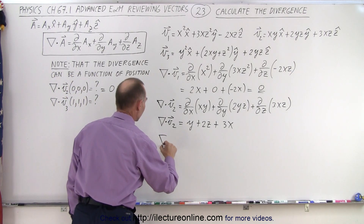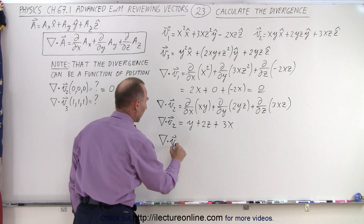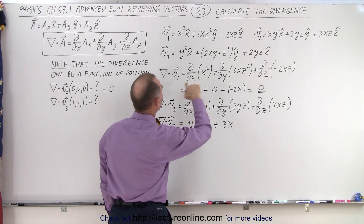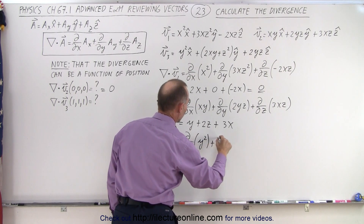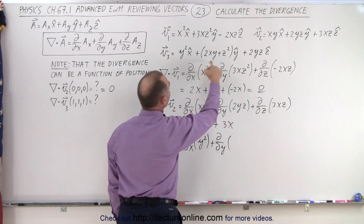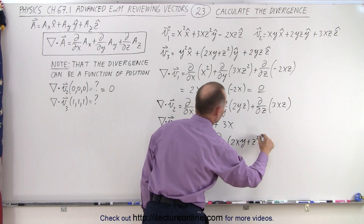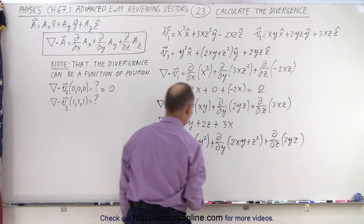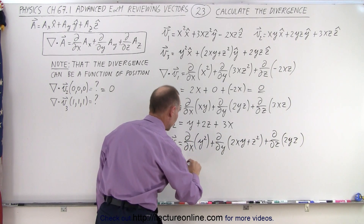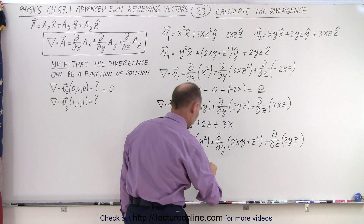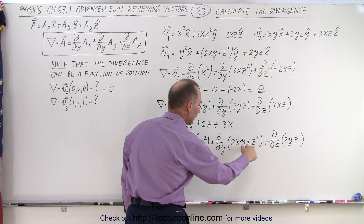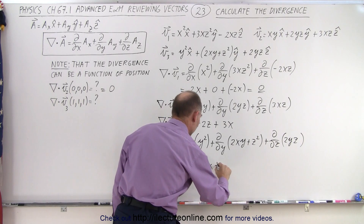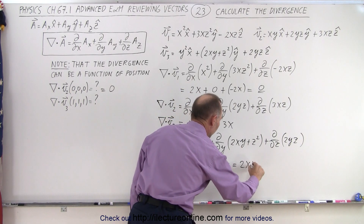Now calculate the divergence of vector field number 3 by taking the del operator operating on the third vector, which is equal to the partial derivative with respect to x of y squared, plus the partial derivative with respect to y of 2xy + z squared, plus the partial derivative with respect to z of 2yz. The derivative of y squared with respect to x is 0, plus 2x with respect to y, and the partial derivative of 2yz with respect to z is 2y, so this is equal to 2x + 2y.